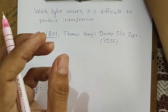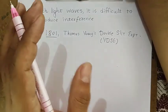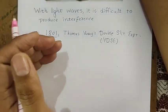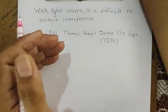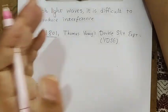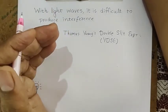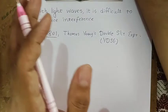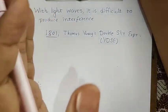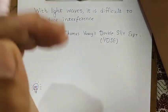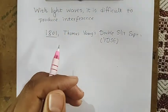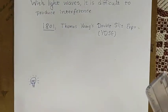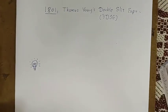With the help of this experiment, Thomas Young clearly showed that yes, light is also doing interference. When the world saw that light also does interference, it was confirmed that light is a wave, because waves only can do interference. Let's see how Young's Double Slit Experiment was performed.